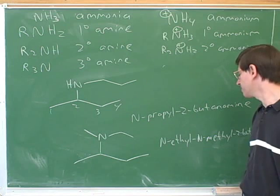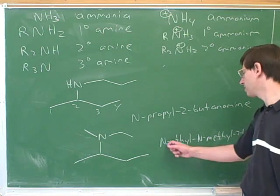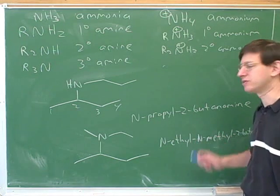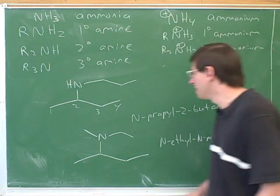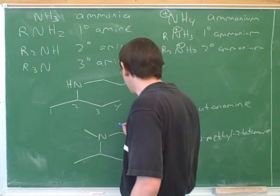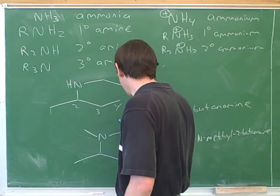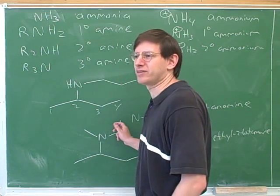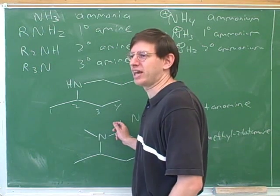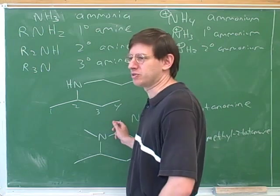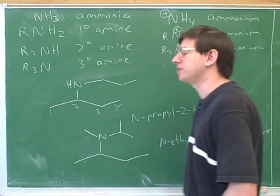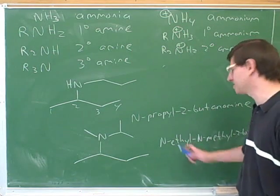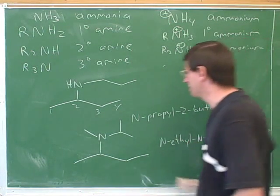It looked like your first instinct was just to call this N-ethyl-methyl and put those two things together. But that would be something like this, where there was a methyl group on the ethyl group — that would indicate a branch substituent. The only way to show that there are actually two separate substituents is two separate locators.